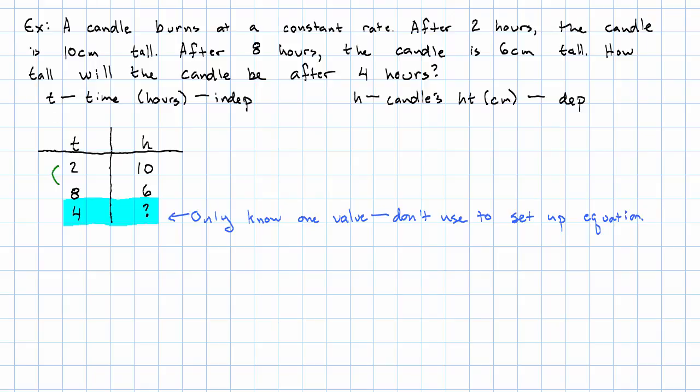So, when T goes up by six, H goes down by four. Our slope is the change in H over the change in T. So, negative two-thirds. Now, we need to pick a point to use to set up the equation. I'm going to pick this first row. So, we get H minus the given H is negative two-thirds times T minus the given T.